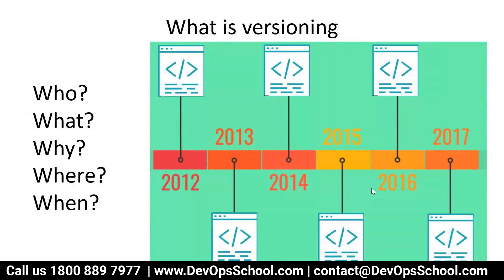If you want to understand Git, you have to understand the versioning concept. Versioning means modifying one source code over a period of time. You have hundreds of files and subdirectories, and the source code is modified by multiple people in a team. How can we keep track of who modified, what modification was made, why, where, and when? That complete history information is what versioning is about.